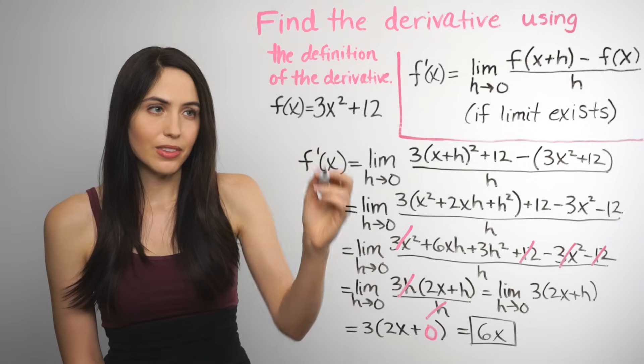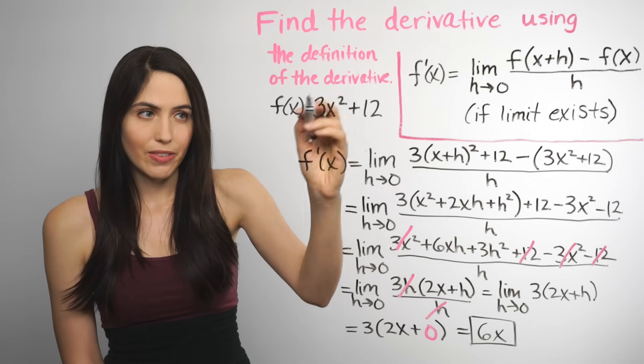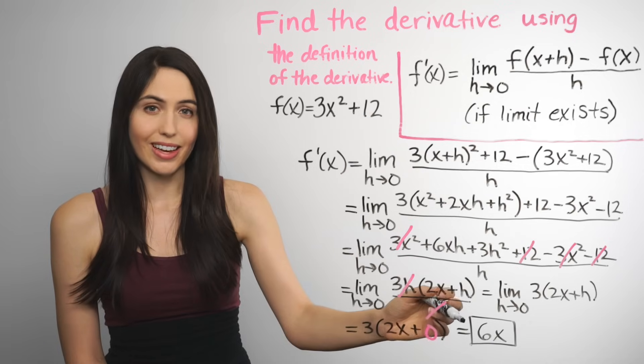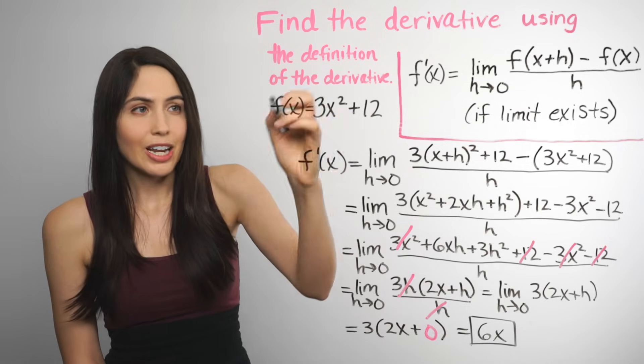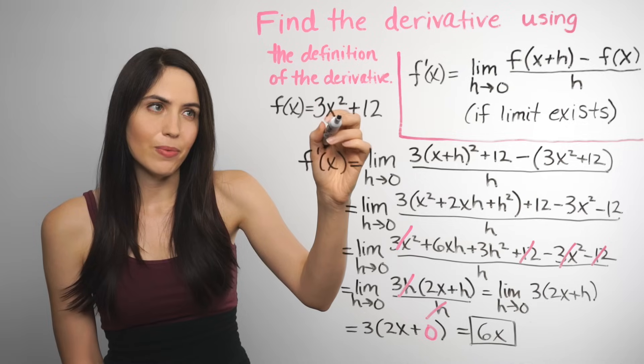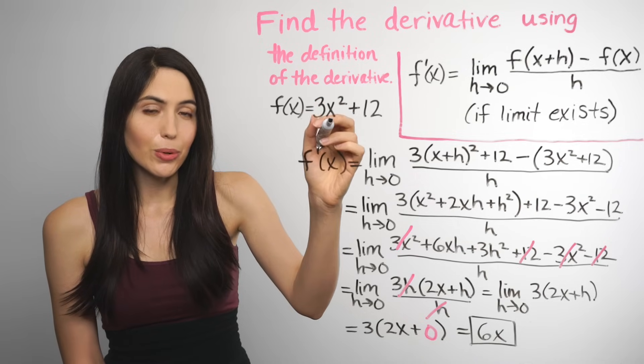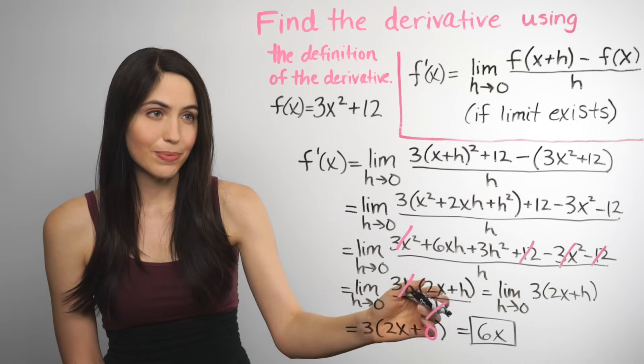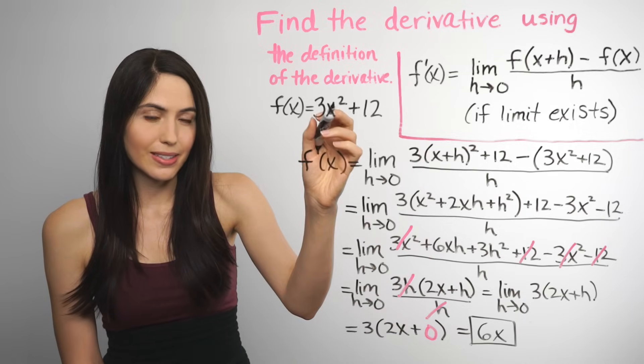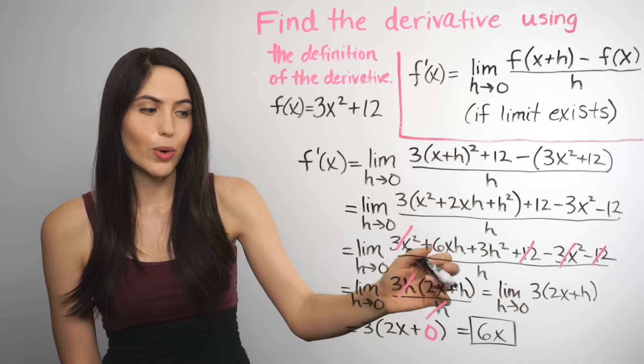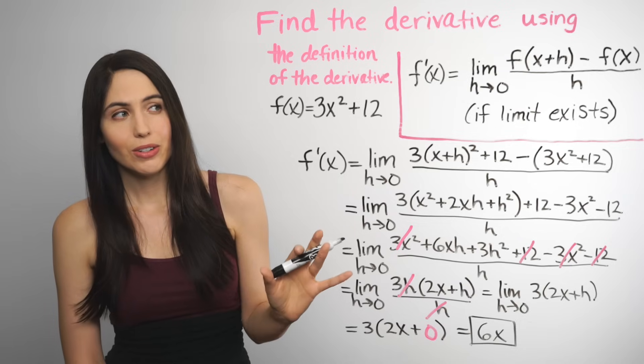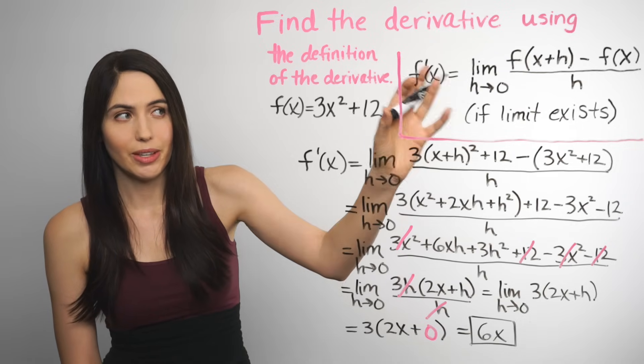What that means is that the derivative of this function, 3x squared plus 12, is just 6x. And anywhere in that function f, the slope would be the number you get by using 6x. At any instant, any x, the slope is what you get from 6x at that instant. So that's how you find the derivative using the definition with the limit.